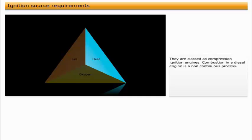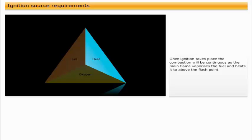Combustion in a diesel engine is a non-continuous process. Steam boilers rely on an external ignition source, such as a spark igniter or pilot flame. Once ignition takes place, the combustion will be continuous as the main flame vaporizes the fuel and heats it to above the flash point.